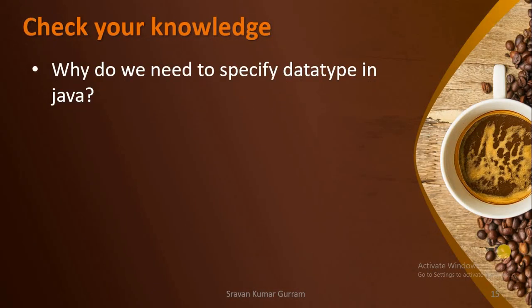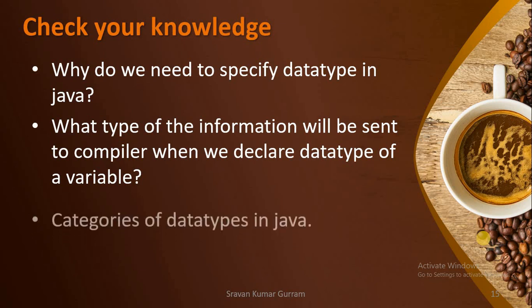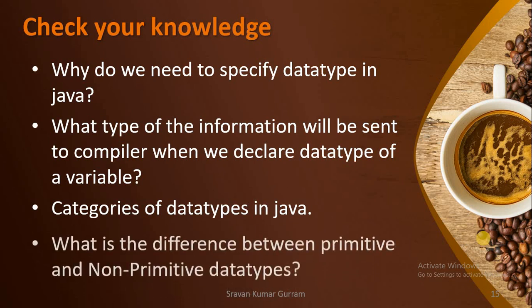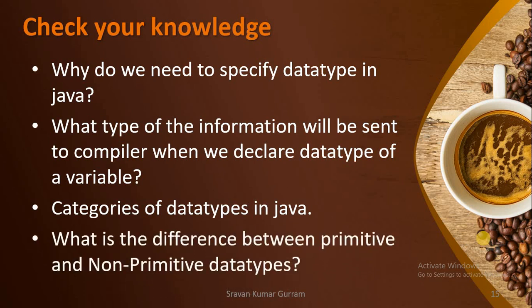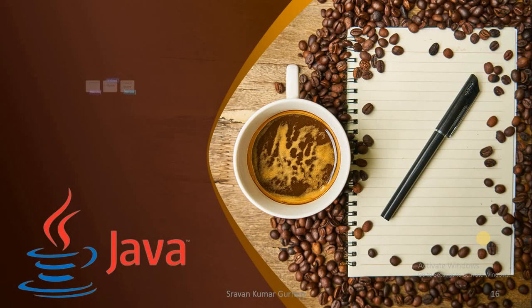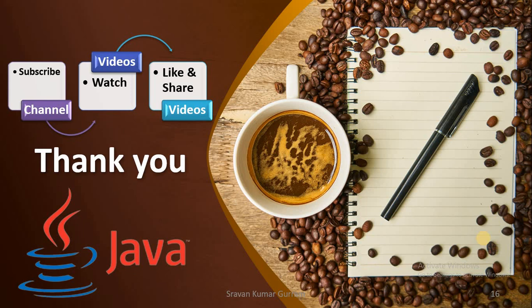Check your knowledge — what have you learned from this video? Why do we need to specify data type in Java? What type of information is sent to the compiler when we declare a data type of a variable? What are the different categories of data types in Java? What are the differences between primitive and non-primitive data types? If this video is useful to you, do subscribe to the channel to get more useful videos. Watch, like, and share the videos. Thank you.